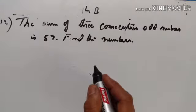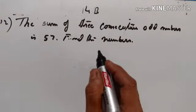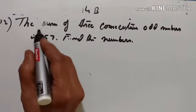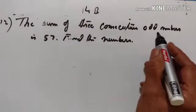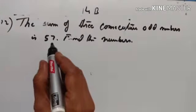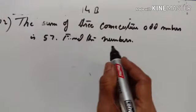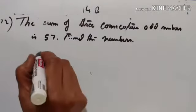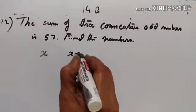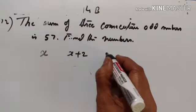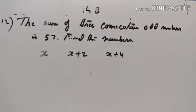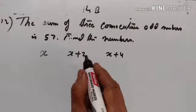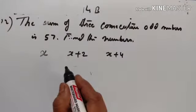Linear equation, standard exercise 14b, Concise Mathematics twelfth. Problem: the sum of three consecutive odd numbers is 57. Find the numbers. If the first number is x, the second will be x plus 2 and the third will be x plus 4. You must be wondering how it is 2 when it is an odd number.